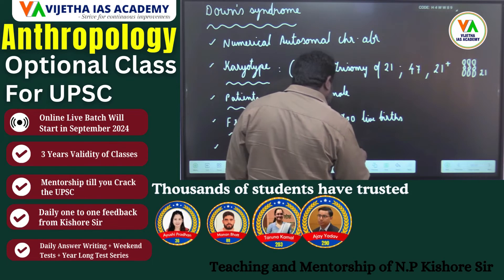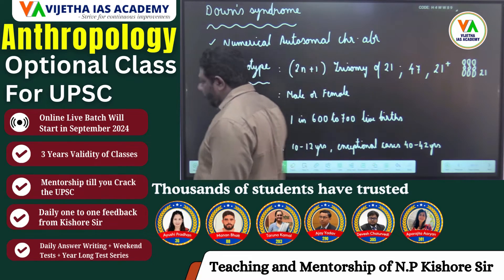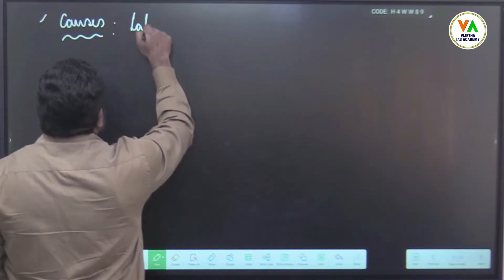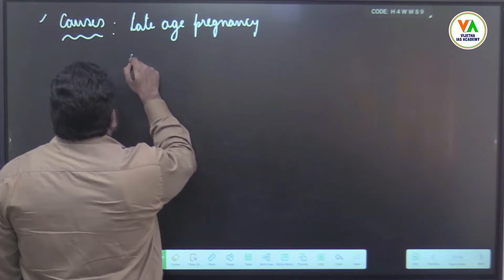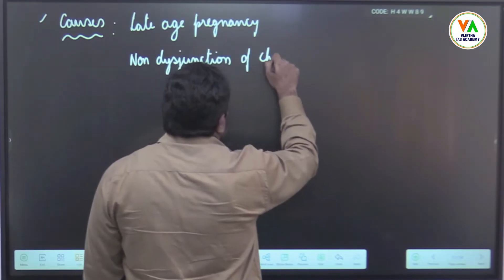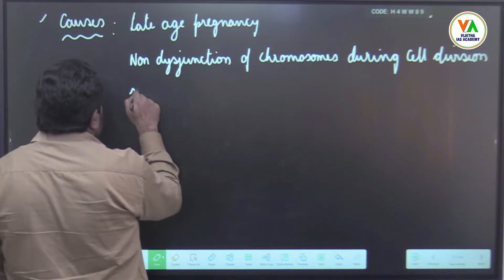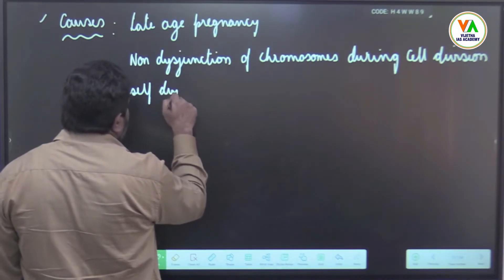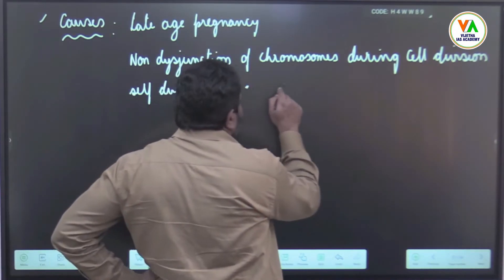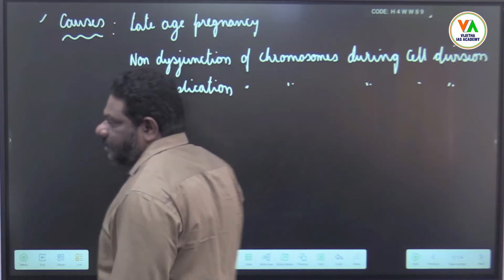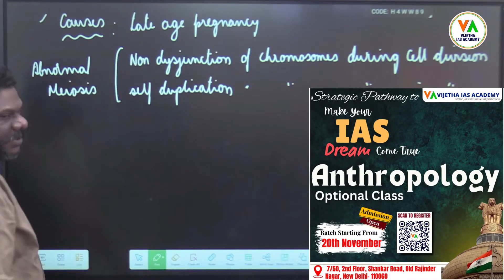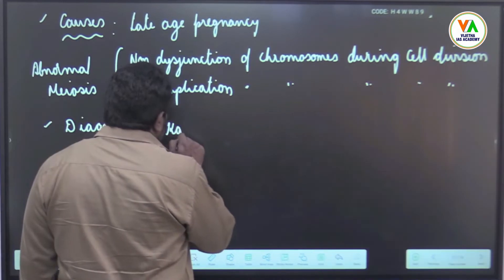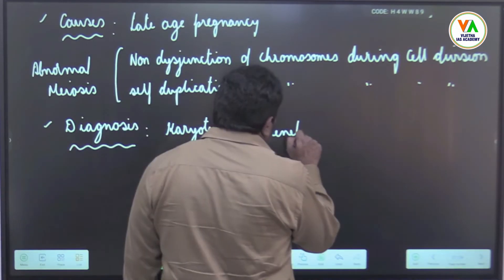Causes include late age pregnancy or non-disjunction of chromosomes during cell division or self duplication of chromosomes during cell division. This is nothing but abnormal meiosis. Diagnosis is through karyotyping, which is nothing but genetic screening.